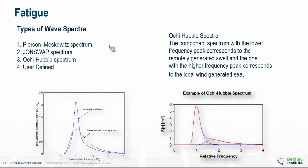The user can also input their own spectrum. The Ochi-Hubble spectrum is a special type in that it is twin-peaked. The component with the lower frequency peak corresponds to remotely generated swell waves, and the one with the higher frequency corresponds to local wind-generated waves.